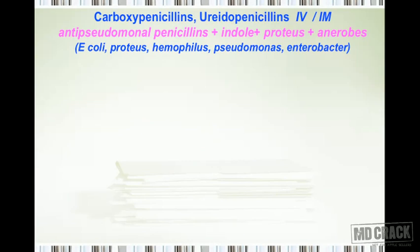Carboxypenicillins and ureidopenicillins are always given by intramuscular or intravenous route — not available orally. These are anti-pseudomonal penicillins, useful against Pseudomonas aeruginosa, indole-positive Proteus, and anaerobes. Their spectrum includes E. coli, Proteus, Haemophilus, Pseudomonas, and Enterobacter. Carboxypenicillin examples are carbenicillin and ticarcillin; these should be kept in mind whenever resistant Pseudomonas infection is encountered.